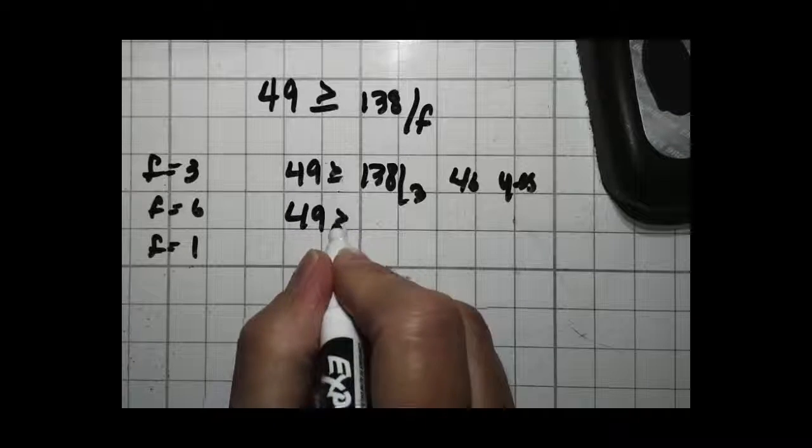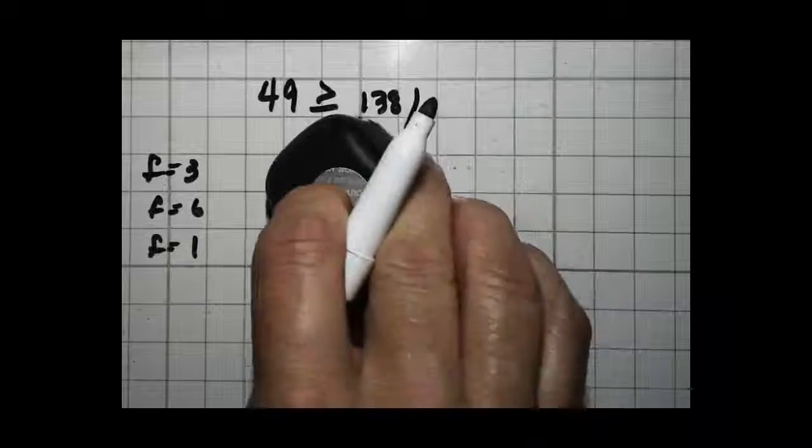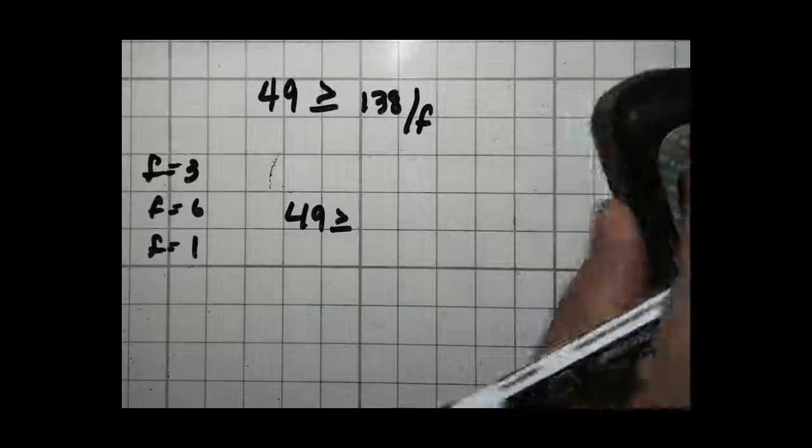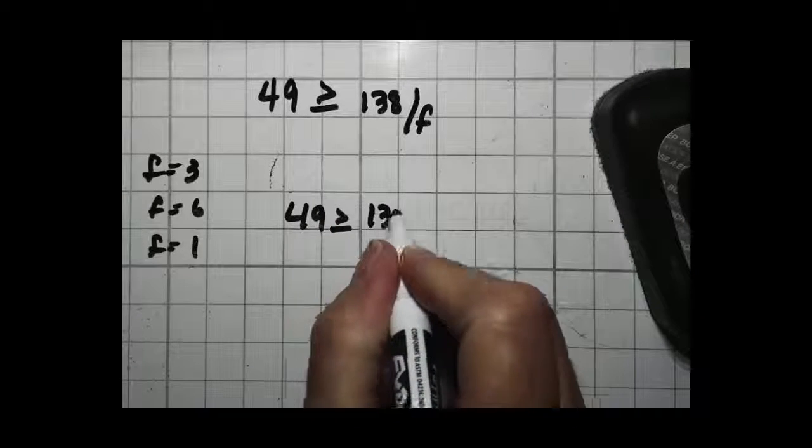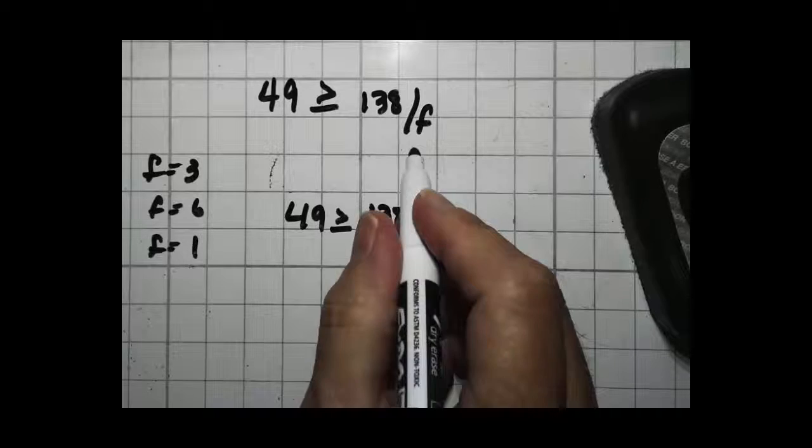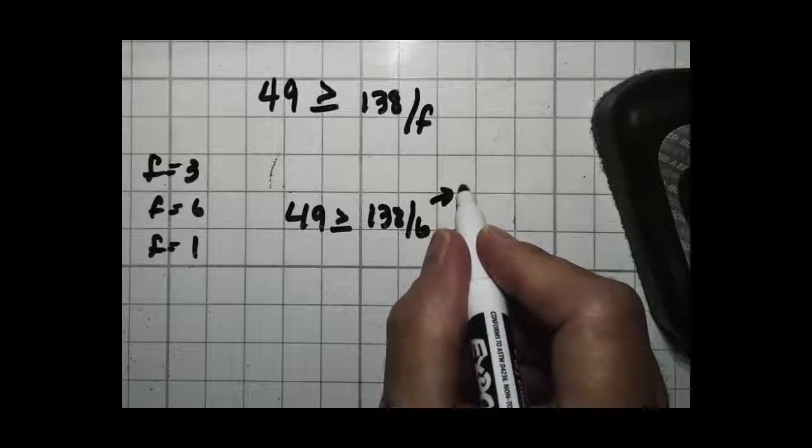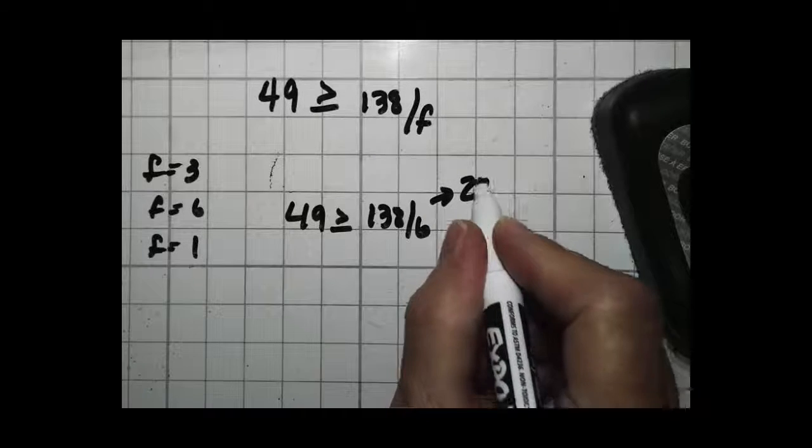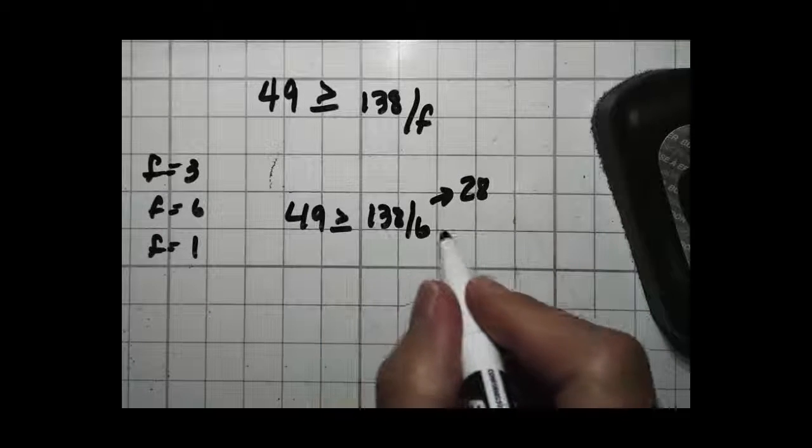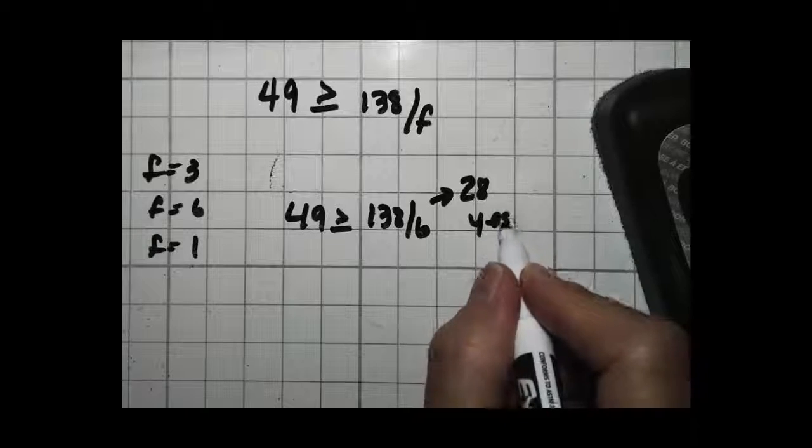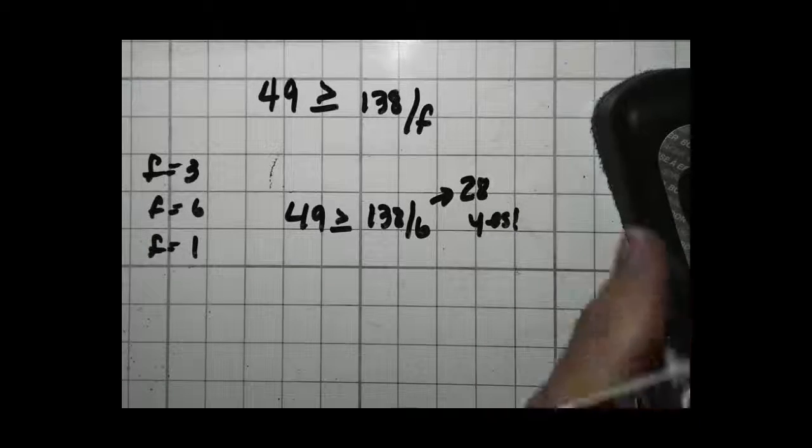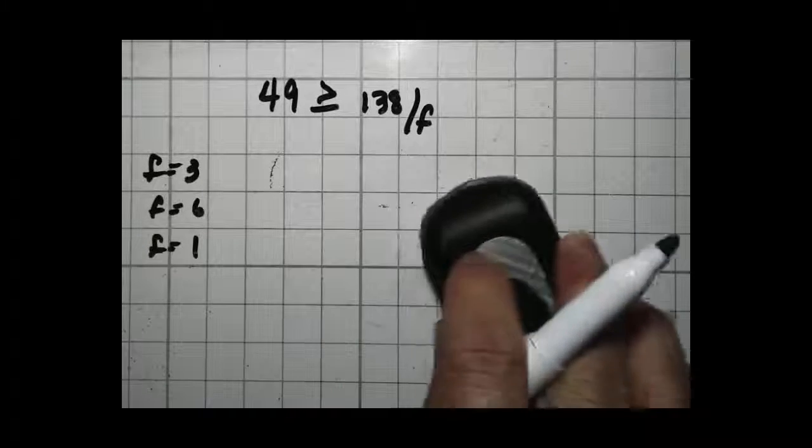How about the next one? 49 greater than or equal to... I'm going to erase this so I have some room. 49 greater than or equal to 138 divided by 6. Everywhere there's an f, I'm going to put in 6. 138 divided by 6 is 28. Is 28 smaller than 49? It certainly is, so that one's also true.